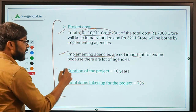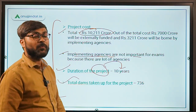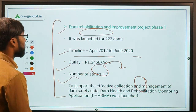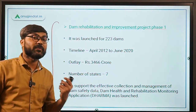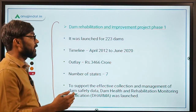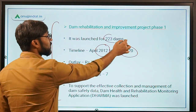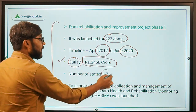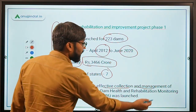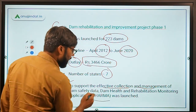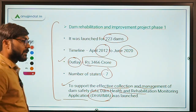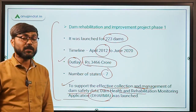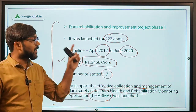The total duration of the project is 10 years, and 736 dams have been included for rehabilitation and improvement. Phase 1 of the project ran from April 2012 to June 2020, covering 223 dams with an outlay of ₹3,466 crore, implemented across 7 states. During Phase 1, the DHARMA App was launched — DHARMA stands for Dam Health and Rehabilitation Monitoring Application — to support the effective collection and management of dam safety data.